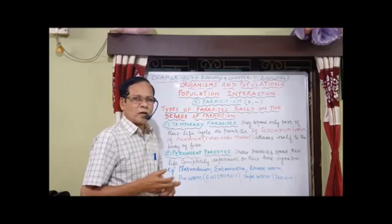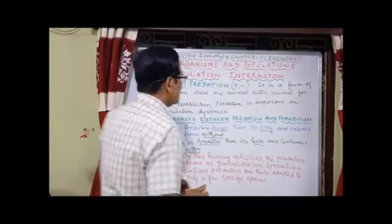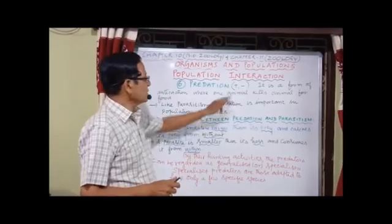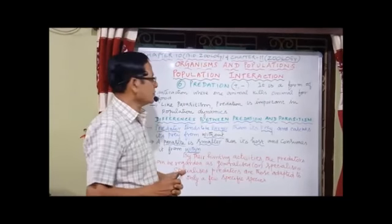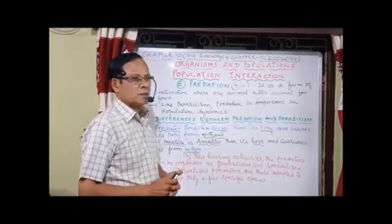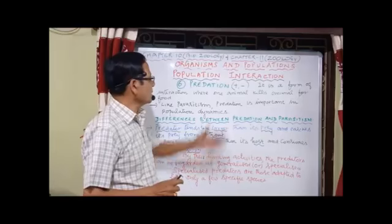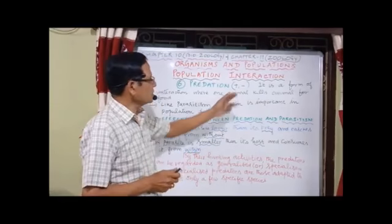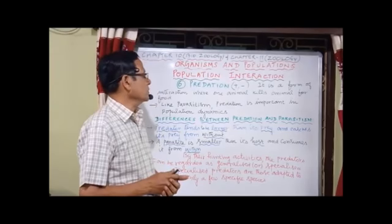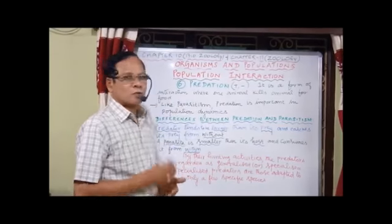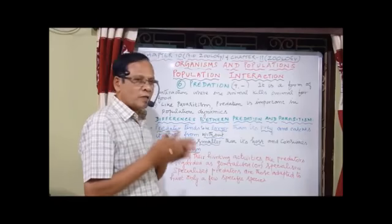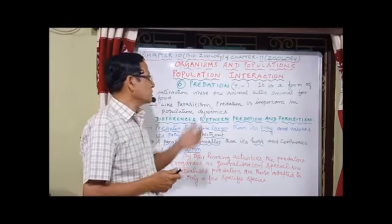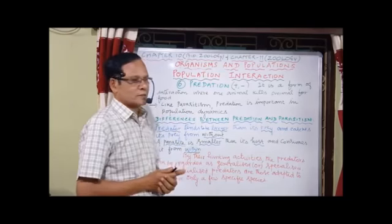That's all about parasitism. We have to go to the next one: predation. Let us take the last inter-specific interaction, that is predation. Here we represent plus and minus. There are two partners: one partner gets benefit and the other is harmed. For example, taking lion and deer — the lion gets benefited whereas the deer loses, even its life. So predation is a form of interaction where one animal kills another animal mainly for food.